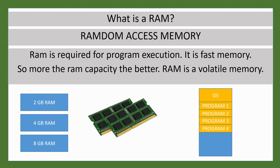Looking at the diagram, you can see programs 1, 2, 3, 4, and the OS all loaded in RAM. Volatile memory means a memory that retains data only while there is a power supply — if there is no power, the data is automatically erased. So to summarize: RAM is Random Access Memory, used for program execution. Every program you run gets loaded onto RAM and is then executed by the CPU.